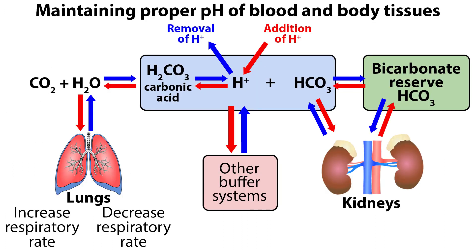The primary factors in the homeostatic process include the lungs, kidneys, and the buffer system. The lungs control certain amounts of carbon dioxide in the blood. Therefore, if the lungs are not functioning properly, CO2 builds up, causing increased carbonic acid, which affects blood pH and leads to acidosis. The main function of the kidneys is retaining or excreting bicarbonate, or HCO3, which is what neutralizes the excess acid in the blood.